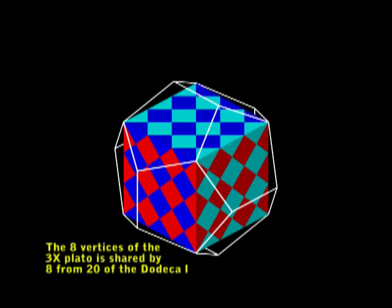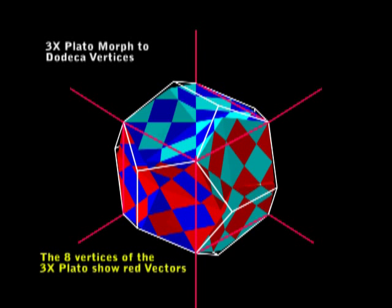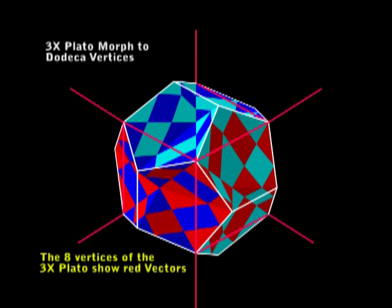In front of you I show the cube, and I'm giving it a red outline with 8 vectors. Now I show that the 3x Plato will morph to the vertices of the dodeca. But if you look at the vertices of the cube, they all stayed put.